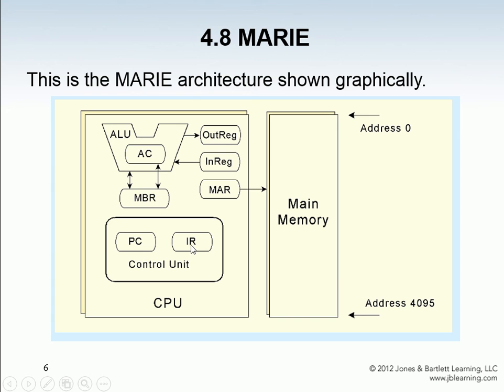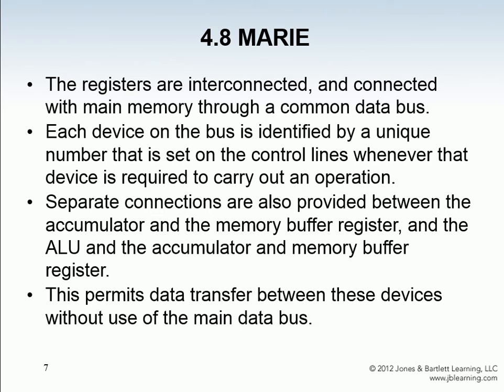All of these registers are connected to each other through a common data bus, and each device on the bus has a number that keeps track of which it is so the operating system can handle what's going where. Also, the accumulator and the memory buffer register have some separate connections, and the ALU and the accumulator do within themselves, just to speed things up — allowing them to communicate without having to travel the full length of the main data bus.